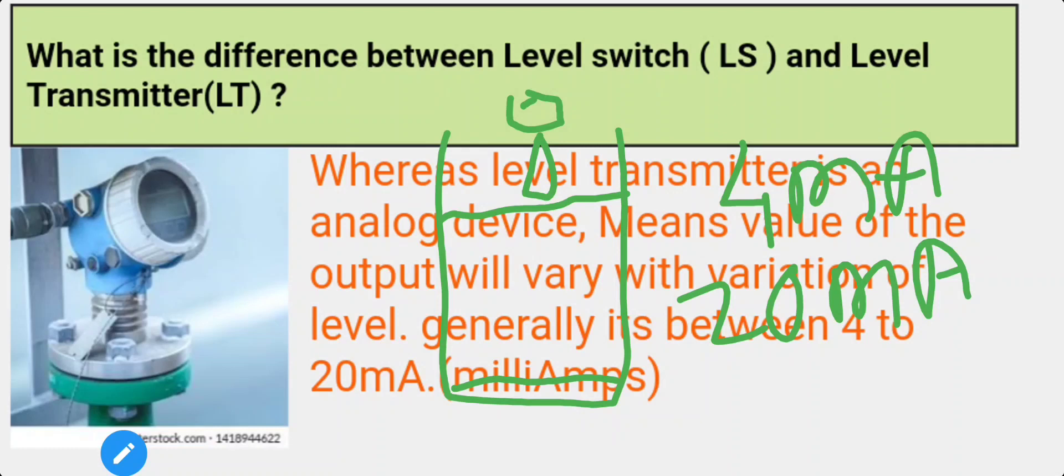Guys, I hope you understood what is the difference between level switch and level transmitter. So my question is, can you tell me why 4 to 20 milliamps is used in analog signals? Why not 0 to 20 milliamps or any other value?